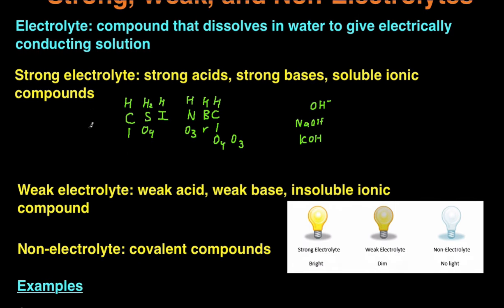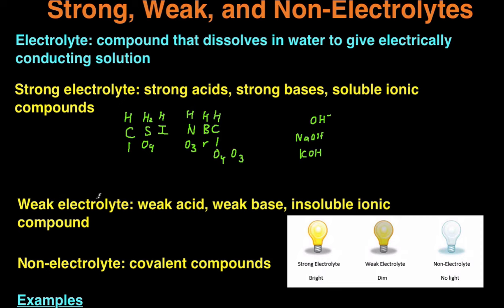Weak electrolytes are solutions that still conduct electricity, but just not as well. So when you run a current through a weak electrolyte, your light bulb is going to be dimmed — you're still going to get light, but the light's not going to be very bright. And the three categories for weak electrolytes are weak acids, weak bases, and then insoluble ionic compounds.